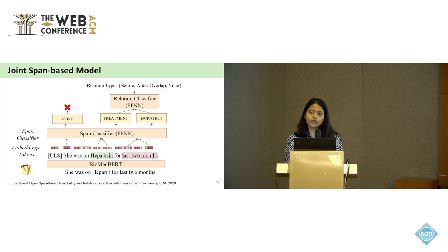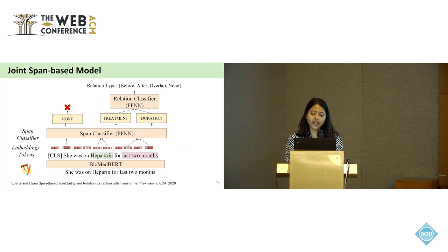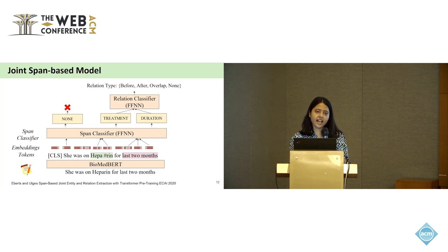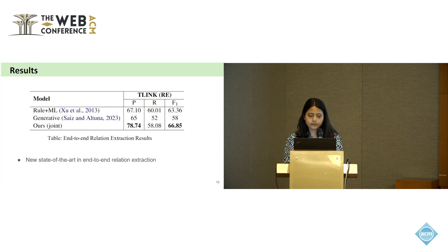We propose a joint span-based model for end-to-end relation extraction, inspired by Eberts and co-authors. We use a base encoder to obtain token embeddings, then enumerate all possible contiguous spans, which are fed to a span classifier. Spans not classified as non-entity are paired up to determine possible relations. We additionally add entity type context by pooling all tokens between two entity pairs, as well as additional training data by flipping entity pair order — for example, if training data has A after B, we also add B before A. Using this model, we obtain a new state of the art on end-to-end relation extraction.